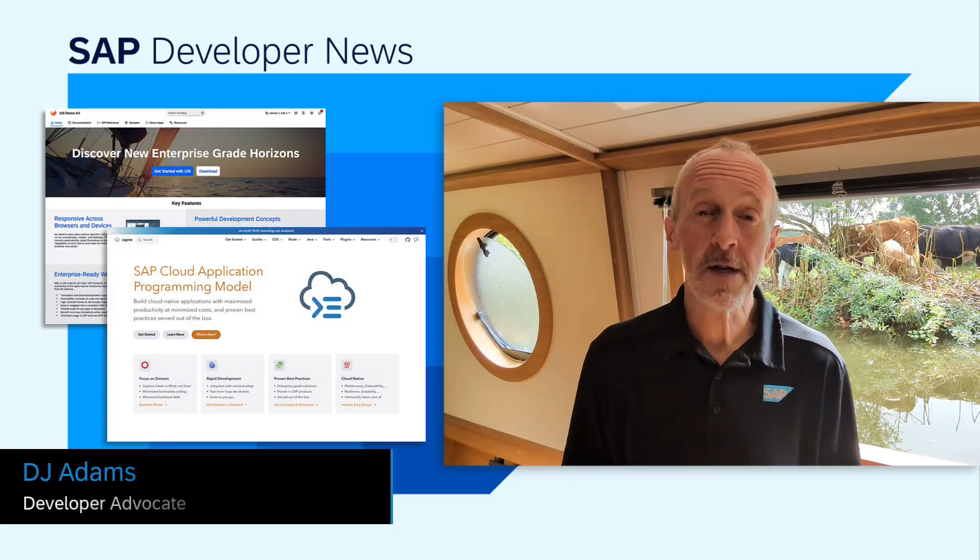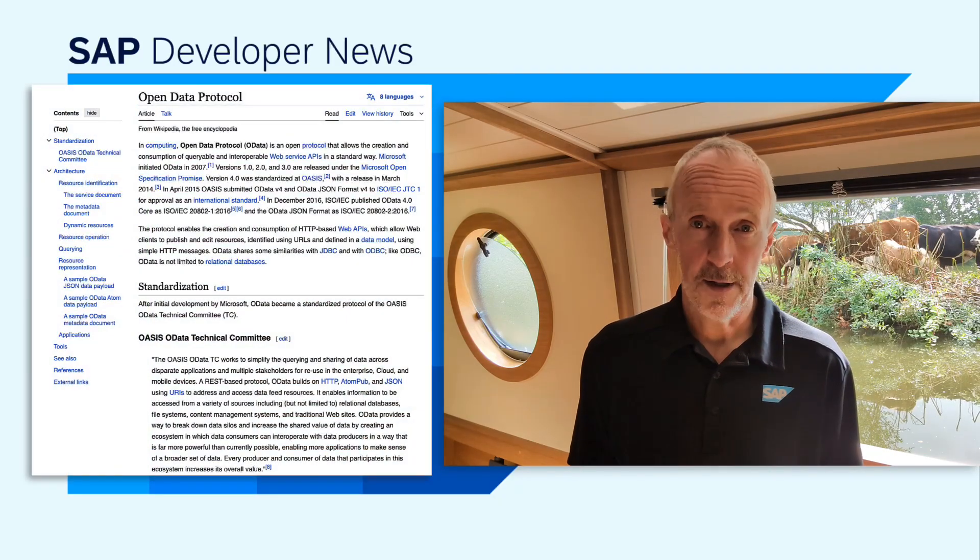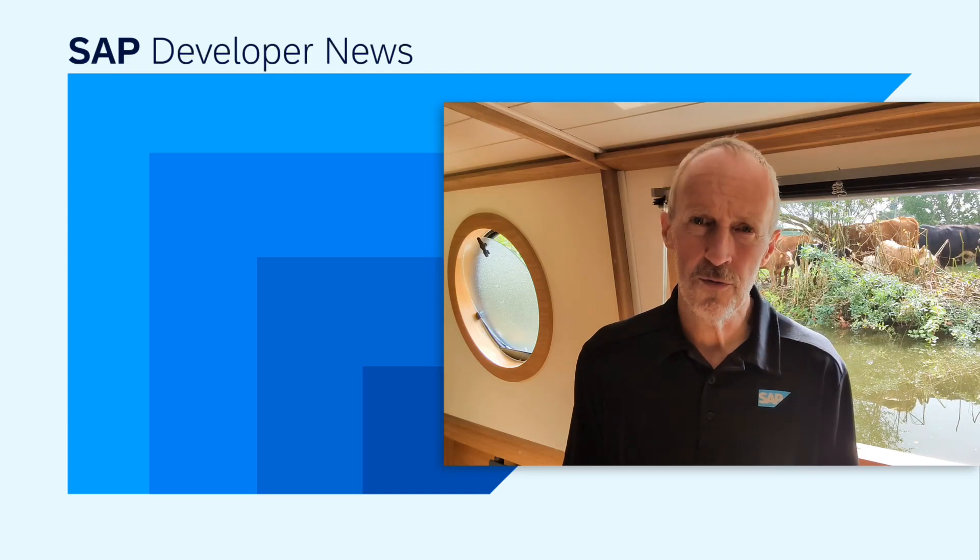Along with RAP, UI5 and CAP are two of the poster children of today's generation of SAP development toolkits. Binding UI5 and CAP together is the venerable OData protocol. One part of OData that is a little bit orthogonal to the rest of OData's design is the concept of actions and functions in bound and unbound flavors.